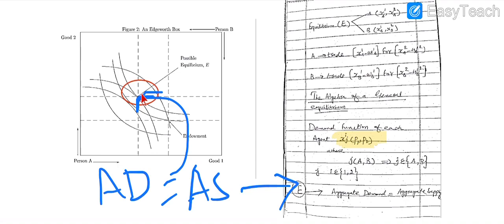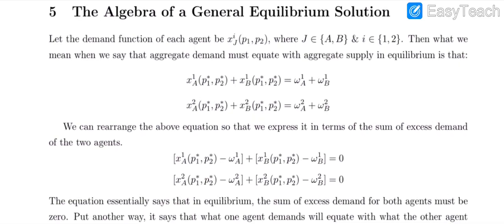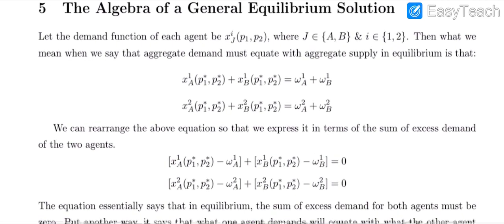Recalling the concept of Pareto efficient allocation: one agent will be better off when another agent is worse off. Discussing this algebraically — although the solution may seem difficult at first, it is actually quite easy once you understand the concept. You just have to solve it once and you will clearly understand. Let's define the general equilibrium solution.